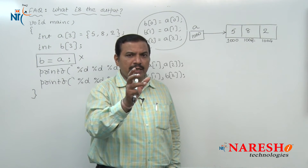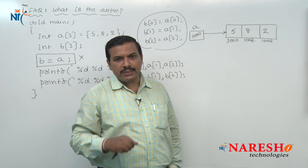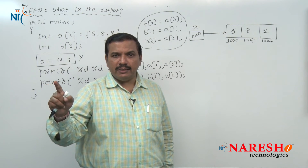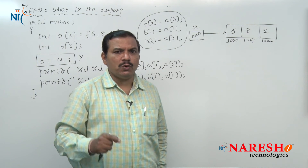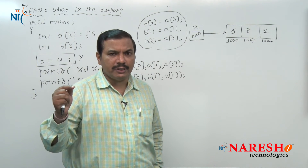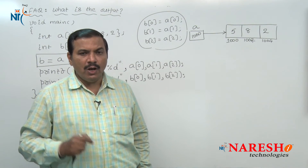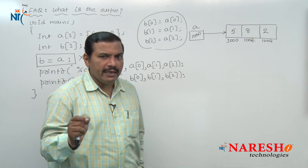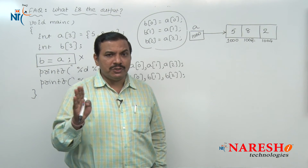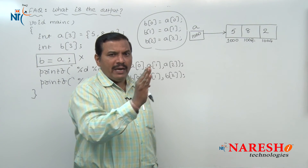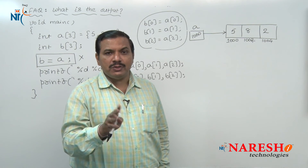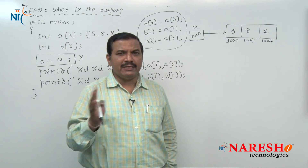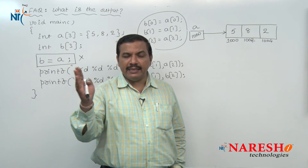But there is a difference between an array and a pointer. An array is a constant pointer, but a pointer is a variable pointer. The address held by a pointer can be altered by performing operations on it. But the address held by array A cannot be changed — once an address is stored in array A, that address cannot be changed throughout the program. That is the reason an array is a constant pointer, and that is the major difference between an array and a pointer.